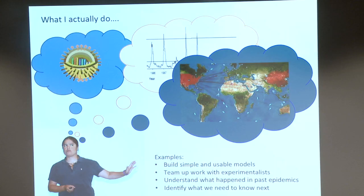First, we build simple — and simple is important — usable models. Not big monsters, but things we can actually gain insights from. We team up and work with experimentalists in a cycle: we come up with an idea, design an experiment, use the model to explore the results, and design the next experiment. We try to understand what happened in past epidemics, which often shows us something really important we just don't know. And we try to identify what it is we need to know next — and maybe that's the less obvious thing.